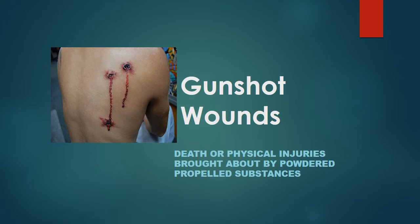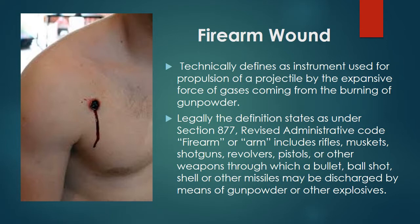Now let's go to another topic: gunshot wounds — death or physical injuries brought about by powder-propelled substances. A firearm is technically defined as an instrument used for propulsion of a projectile by the expansive force of gases from the burning of gunpowder. Legally, under Section 877 of the Revised Administrative Code, a firearm or arm includes rifles, muskets, shotguns, revolvers, pistols, or other weapons through which a bullet, ball, shot, shell, or other missiles may be